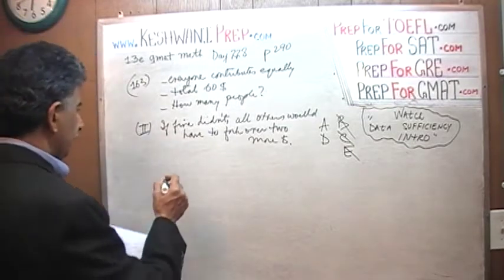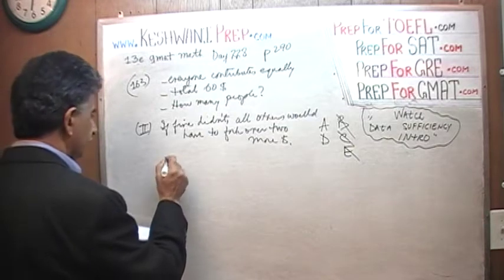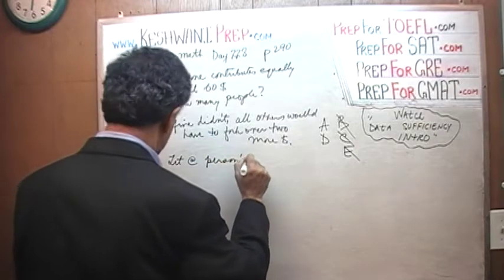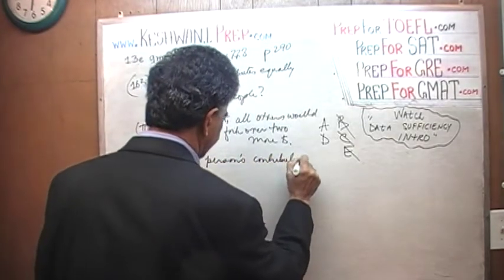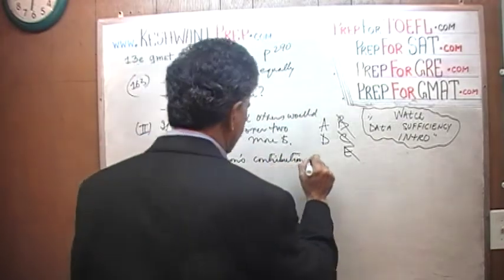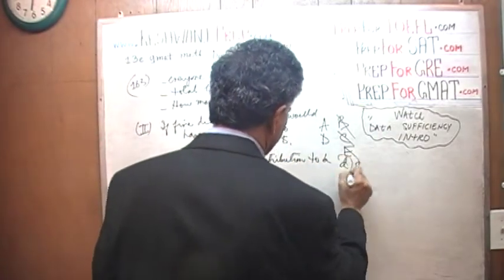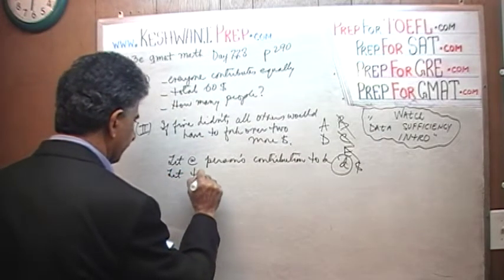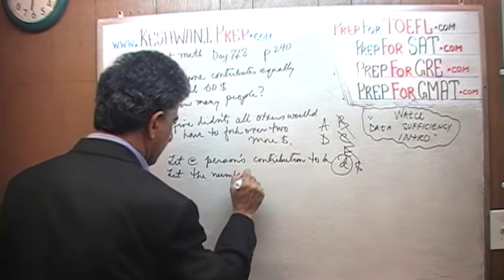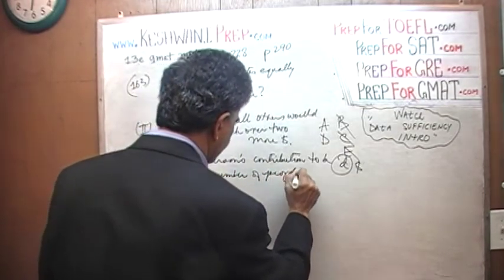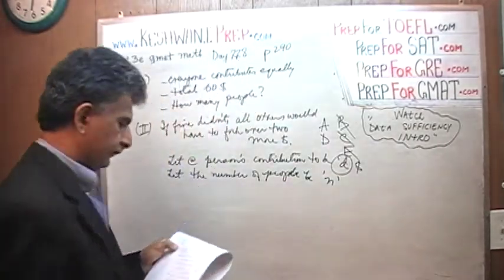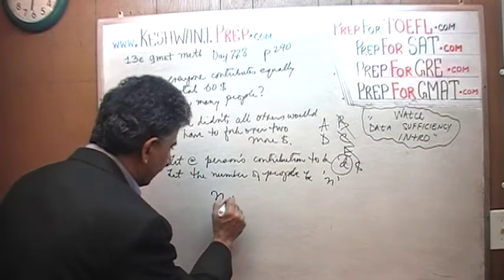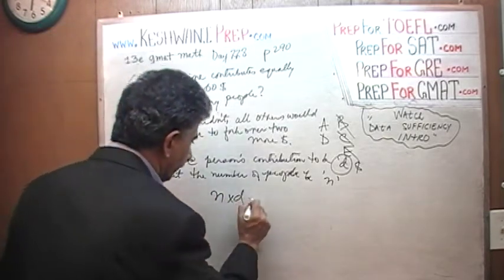So we're going to denote, we're going to use, let each member's, each person's, each person's contribution to be D dollars. We're using letter D to represent each person's contribution. We're also going to say, let the number of people, number of people be N. In other words, we have N people, they are each contributing D dollars, and we are told that the total amount raised was 60 dollars. That's our first equation.